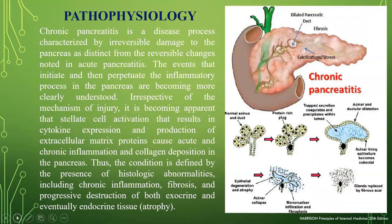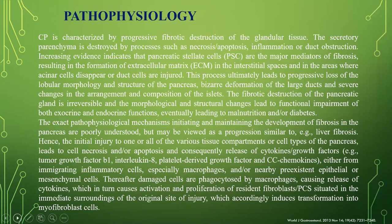Chronic pancreatitis is characterized by irreversible damage of the pancreas, in contrast to the reversible changes noted in acute pancreatitis. Irrespective of the mechanism of injury, stellate cell activation results in cytokine expression and production of extracellular matrix proteins, causing acute and chronic inflammation and collagen deposition. The condition is defined by histologic abnormalities including chronic inflammation, fibrosis, and progressive destruction of both exocrine and eventually endocrine tissue, leading to atrophy. The disorder is characterized by progressive fibrotic destruction in which secretory parenchyma is destroyed by necrosis, apoptosis, inflammation, and duct obstruction.